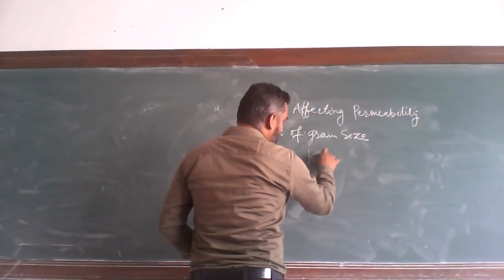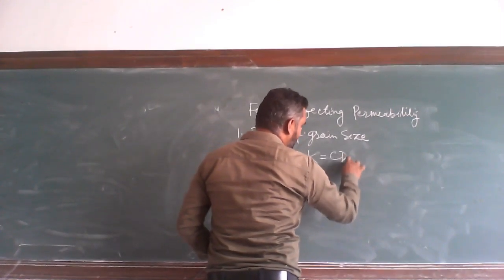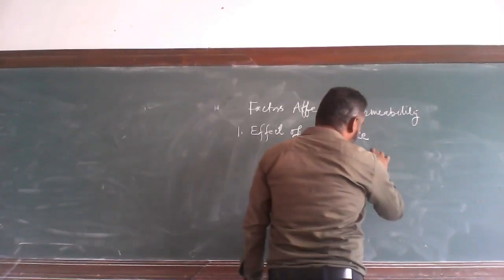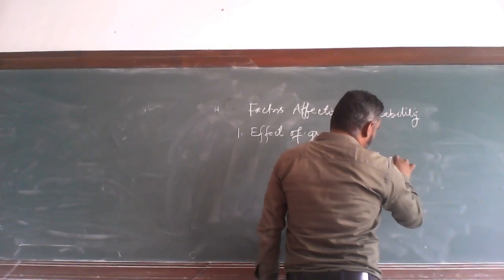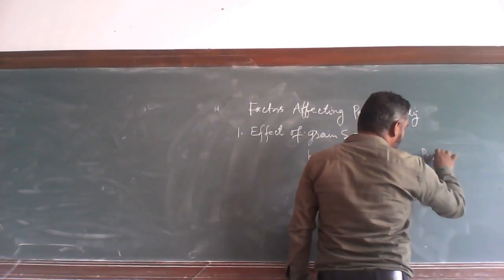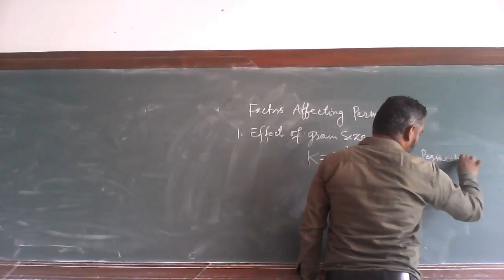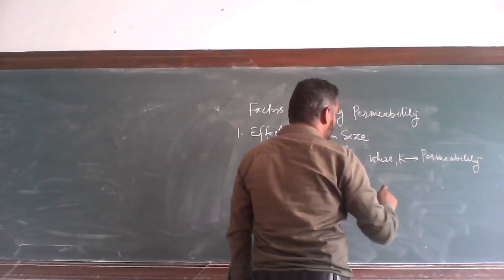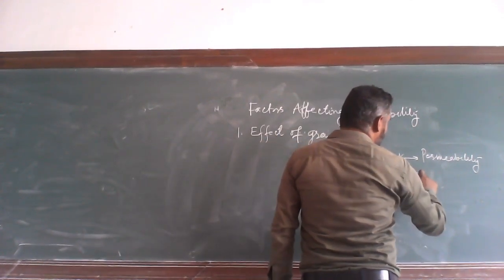And A is equal to C equal to N square, where A is permeability and C is some constant.